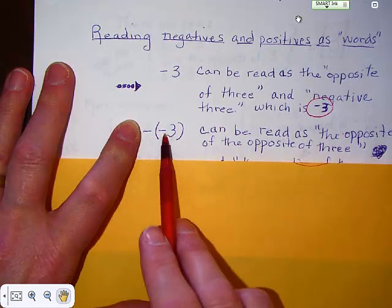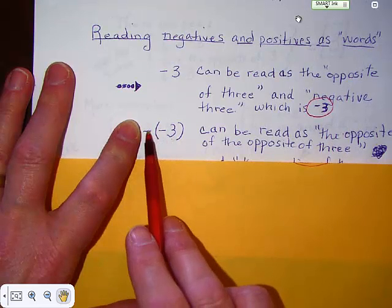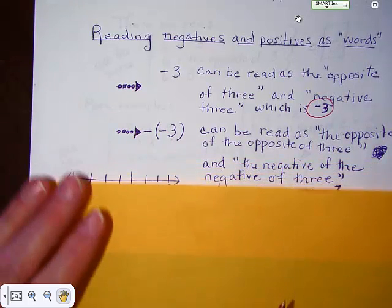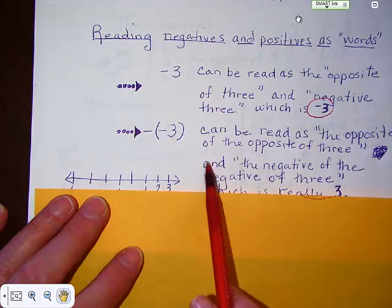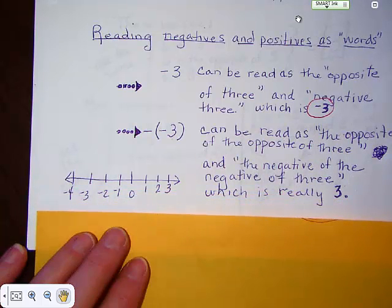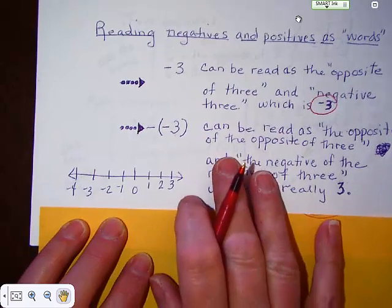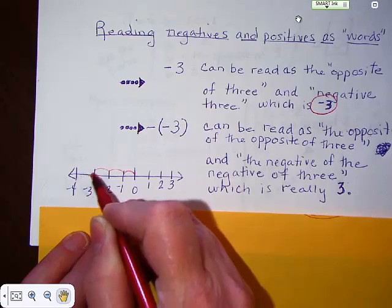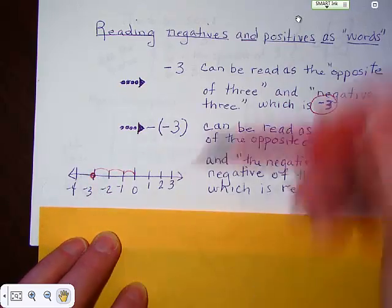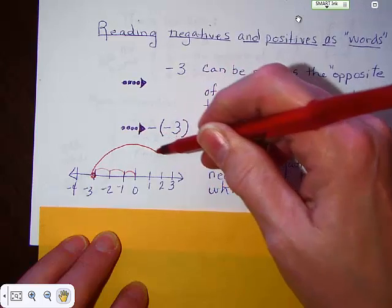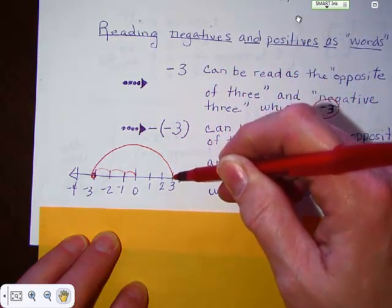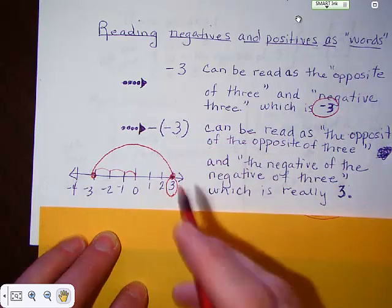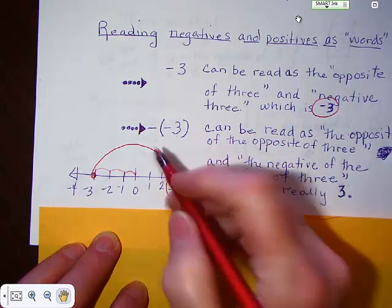Two negatives do make a positive. If you have two negatives in a row, it's going to be positive. This can also be read as the negative of the negative of 3, which is really 3. Here's negative 3 — the opposite of 3. And then the opposite of negative 3 is positive 3. So the opposite of the opposite of 3 is actually 3.